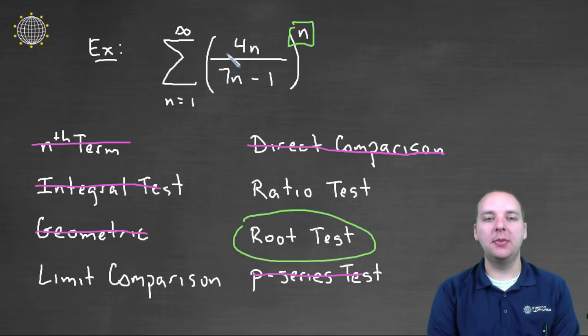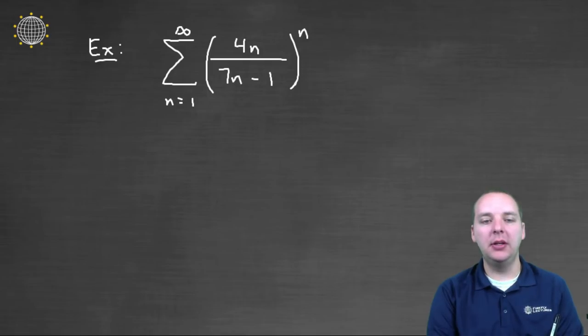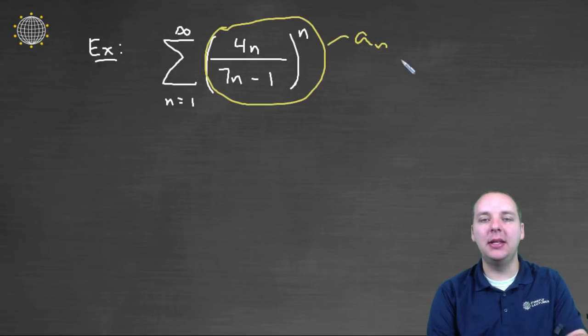Alright, so let's jot this guy down and think about what the root test would tell us. So what we need to do is if this guy is considered our a sub n then we're going to take the nth root of the absolute value of a sub n.